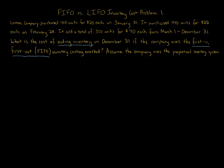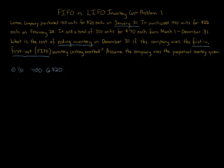The first layer corresponds to January 31st — that's Layer 1. On January 31st, the company purchased 400 units at $20 each. Some students like to calculate the total, which is $8,000, but I'll note 400 units at $20 so you can see both the quantity and the price per unit.